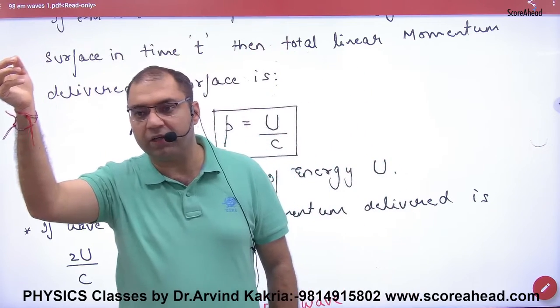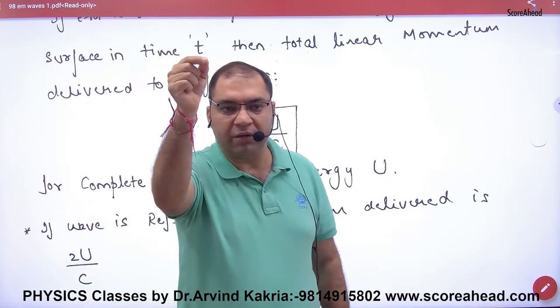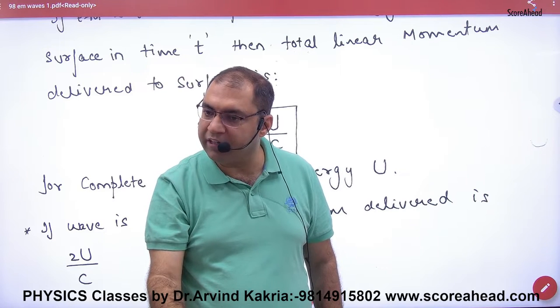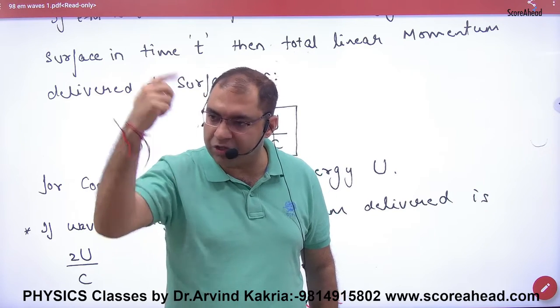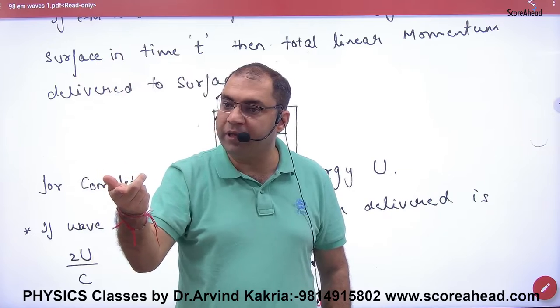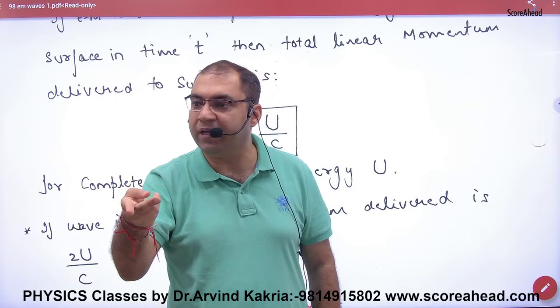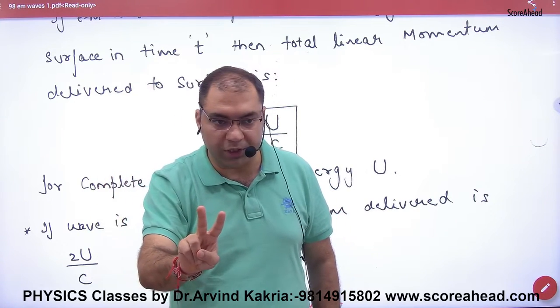Remember this concept: when one ball comes with momentum P and goes back with momentum minus P (minus sign indicates direction change), what is the change in momentum? P minus minus P equals 2P.